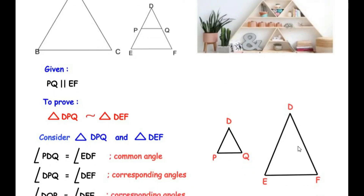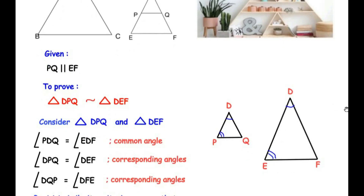Let us check which angles are going to be the same. In triangle DPQ and triangle DEF, angle D is a common angle, so angle PDQ equals angle EDF. Next, angle DPQ equals angle DEF because PQ is parallel to EF, making these the corresponding angles of the two parallel lines. Similarly, angle DQP equals angle DFE, again because of the corresponding angles of the parallel lines PQ and EF.